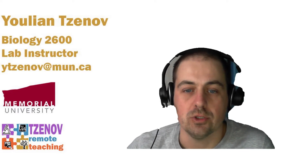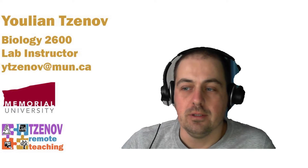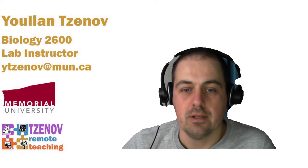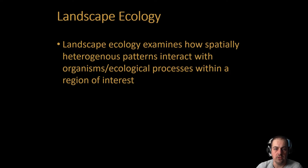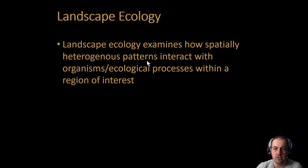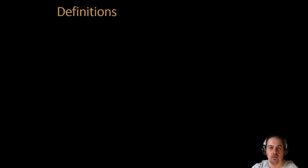Let's get started with a definition. This lab focuses on landscape ecology, so: landscape ecology examines how spatially heterogeneous patterns — physical structures — interact with organisms or ecological processes, meaning the biological aspects within a region of interest. We're going to start with some simple definitions and work our way up to more complicated ones.